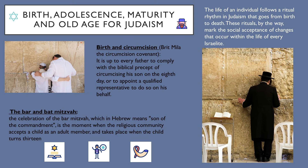The life of an individual follows a ritual rhythm in Judaism that goes from birth to death. These rituals mark the social acceptance of changes that occur within the life of every Israelite. Birth and circumcision: it is up to every father to comply with the biblical precept of circumcising his son on the eighth day, or to appoint a qualified representative to do so on his behalf.